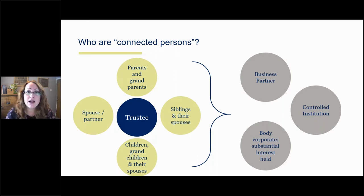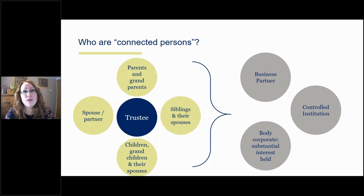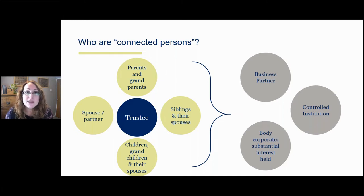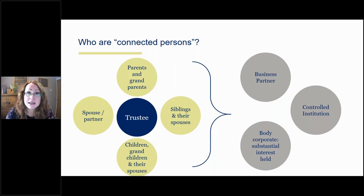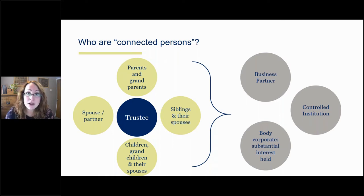On the other side, you've got organisations, companies, and institutions. If you or any of your family members, or two or more of you together, have a connection with a business partner or institution where you have control of that institution, or a substantial interest in a body corporate, then those institutions or organisations or business partners will also be caught as connected persons. For example, if you run a business in partnership with another person, that person is a connected person to you. If your brother is in partnership with that person, then that person is also a connected person to you.